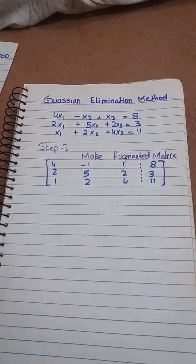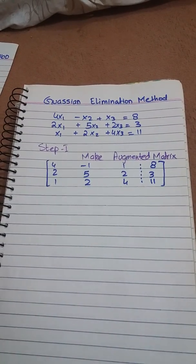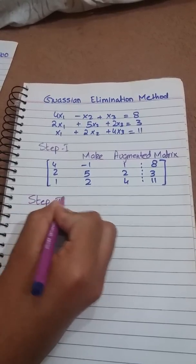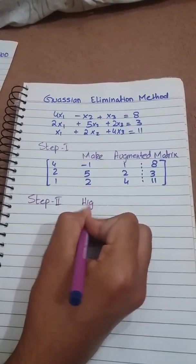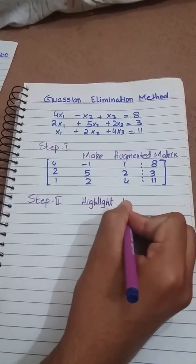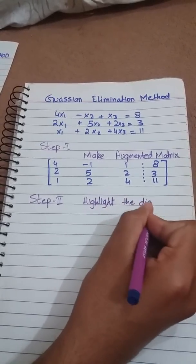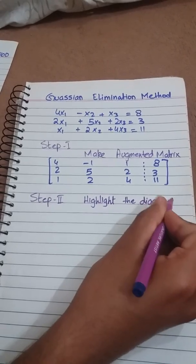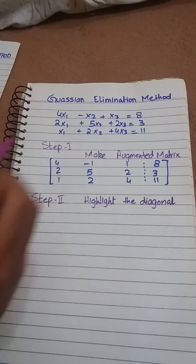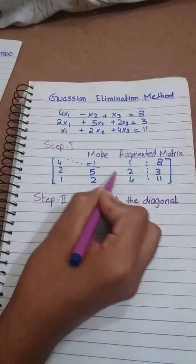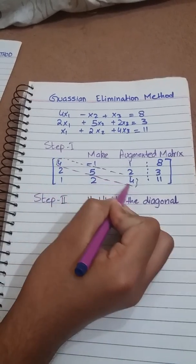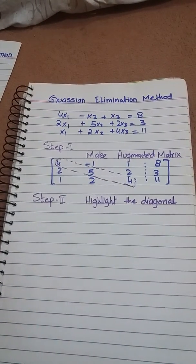Now step two is highlight the diagonal. This is the diagonal of our given matrix.